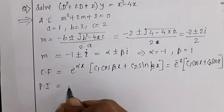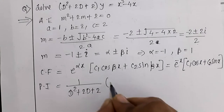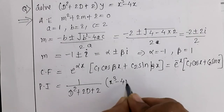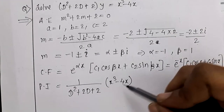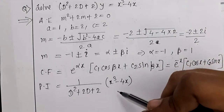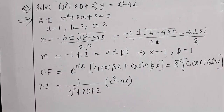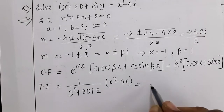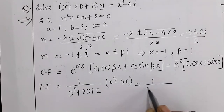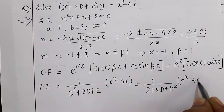Next, PI = 1/(D² + 2D + 2) × (x³ - 4x). The right-hand side is a polynomial of highest degree 3, so we need terms up to D³. We rearrange as (1/2) × 1/(1 + D + D²/2) × (x³ - 4x).